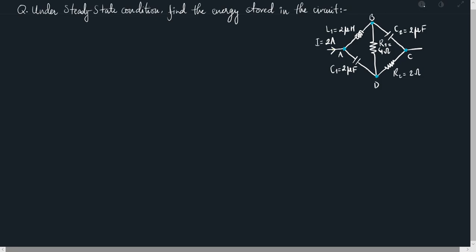Hello everyone, welcome to my channel Sigmax. Today we'll learn how to solve this specific kind of problem. The goal of this problem is to find the total energy stored in the circuit under a steady state condition. The steady state condition means that the current at each point in the circuit is constant and does not change with time, so the whole circuit can be considered as a DC circuit.